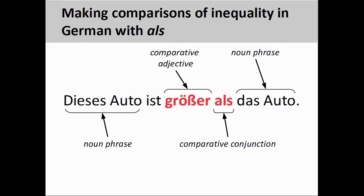German forms comparisons in a manner similar to English. The sentence 'dieses Auto ist größer als das Auto' is a translation of the English sentence in the prior slide. The noun phrase 'dieses Auto' in the independent clause is being compared to the noun phrase 'das Auto' in the comparative clause — more precisely, it is a characteristic of the two objects, namely their size, that is being compared. 'Größer', the comparative form of the adjective 'groß', is used to make this comparison. In German, the comparative conjunction 'als' serves the same function as the English 'than'. You will note that the verb is deleted in the comparative clause as it is redundant.